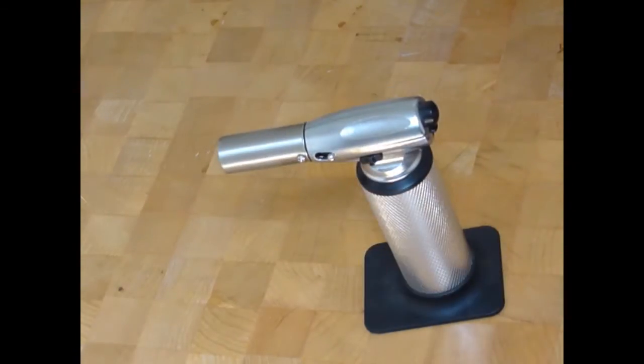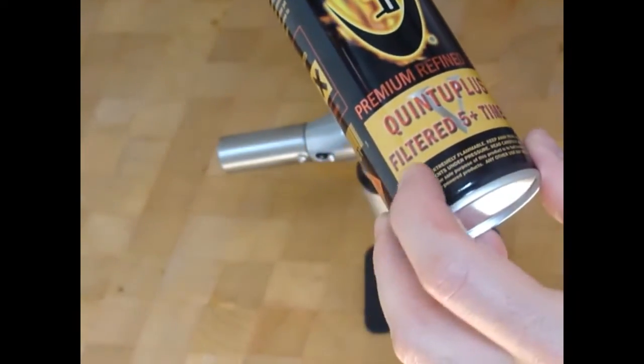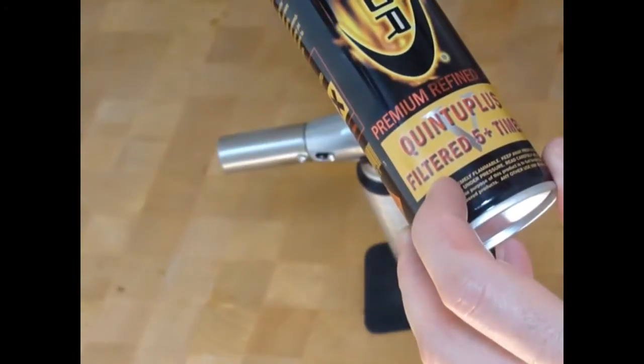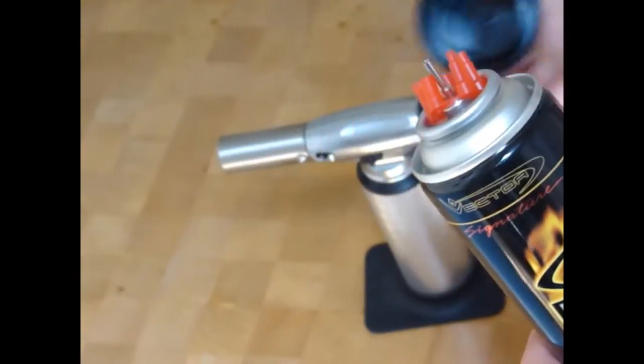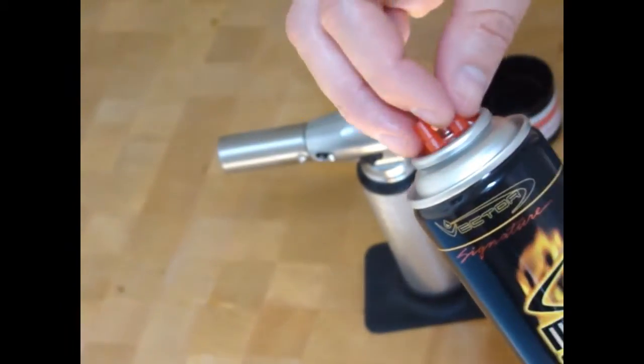It goes off by itself when you set it down. This is the extra premium refined butane filtered five times. I get this at Chef Depot. It comes with a bunch of tips on it.